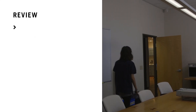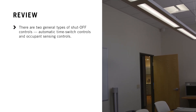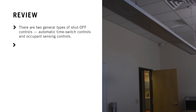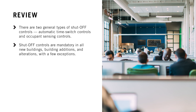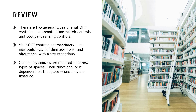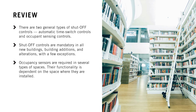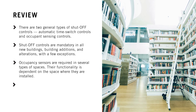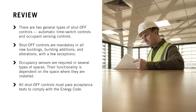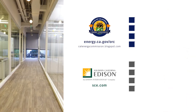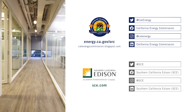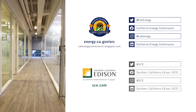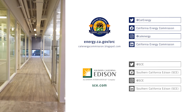Let's review what we've learned. There are two general types of shutoff controls: automatic time switch controls and occupant sensing controls. Shutoff controls are mandatory in all new buildings, additions, and alterations, with a few exceptions. Occupancy sensors are required in several types of spaces, and their functionality is dependent on the space where they're installed. All shutoff controls must pass acceptance tests to comply with the Energy Code. For more information, visit the Energy Commission website at energy.ca.gov/ORC.